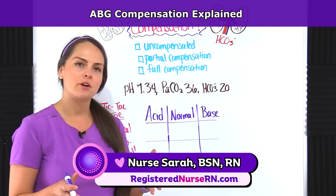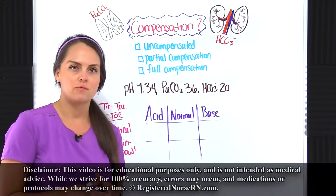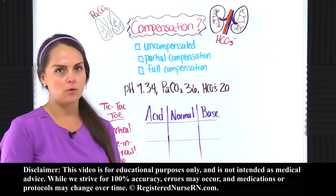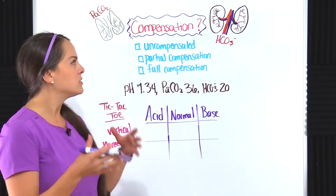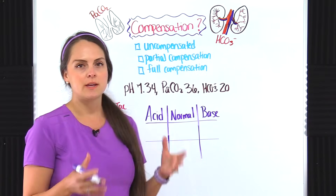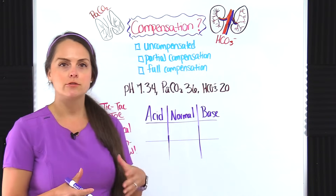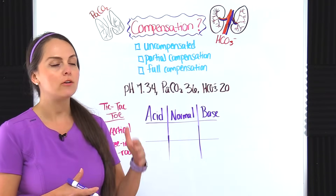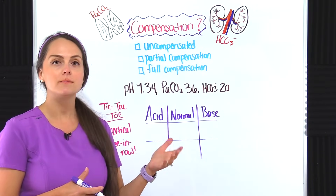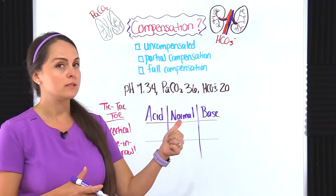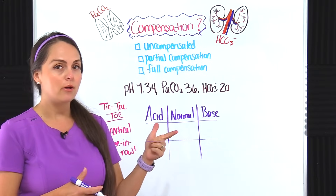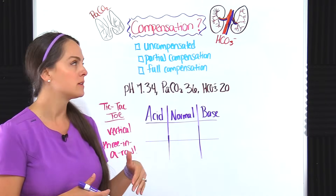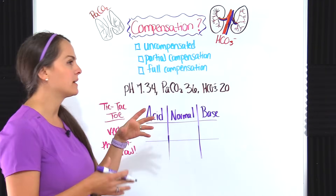Let's go over how to determine compensation whenever you're solving arterial blood gas problems. This is a source of confusion for some people whenever they're trying to solve ABG problems. They don't usually have problems trying to determine if it's a respiratory or metabolic problem, or acidosis or alkalosis, but whenever they get to this part, they get stuck.